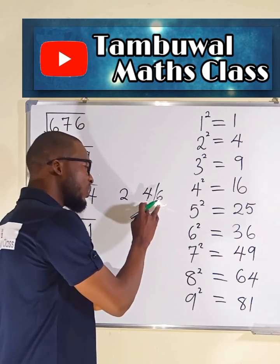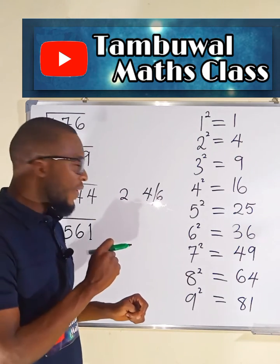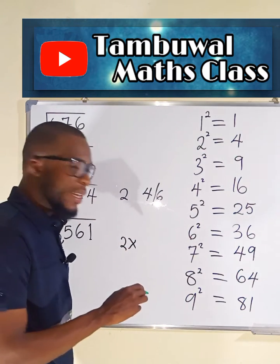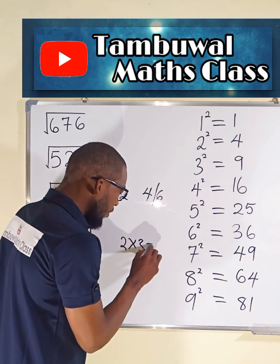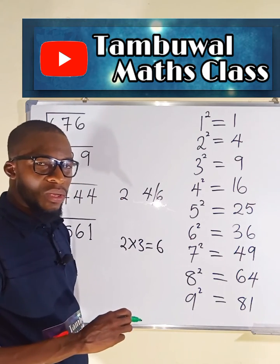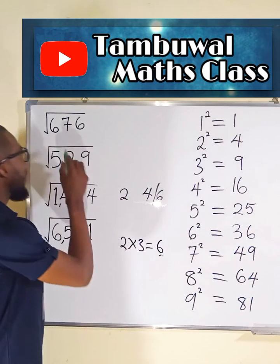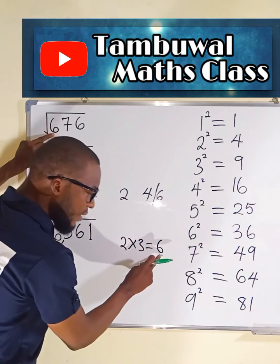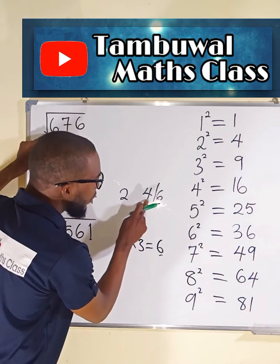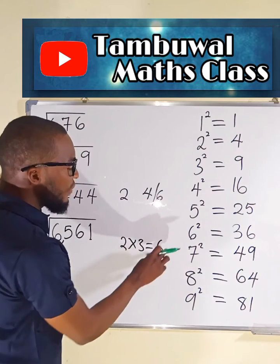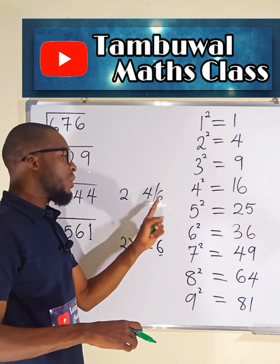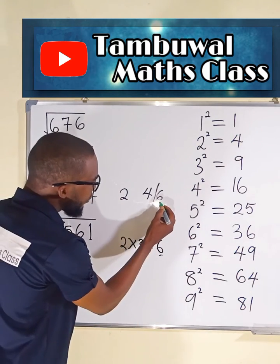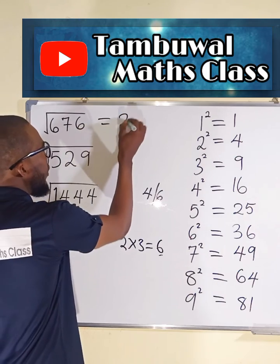To find the actual digit, we multiply 2 by the number immediately after it, which is 3, and we get 6. Next, we relate this 6 to the first digit 6 of the original number. If this digit is less than 6, we take the smaller one, which is 4. But if it is greater than or equal to 6, we take the bigger number, which is 6. Since it is equal to 6, we take 6. And our answer is 26.